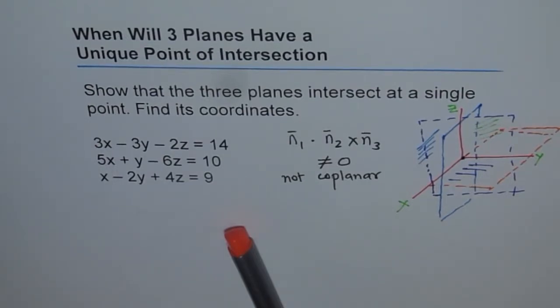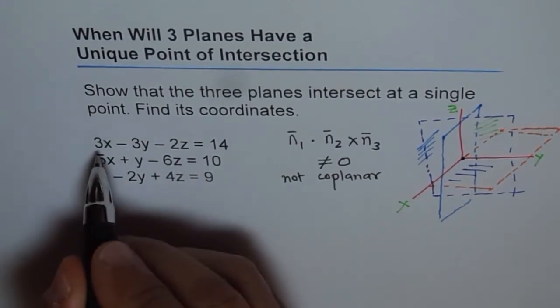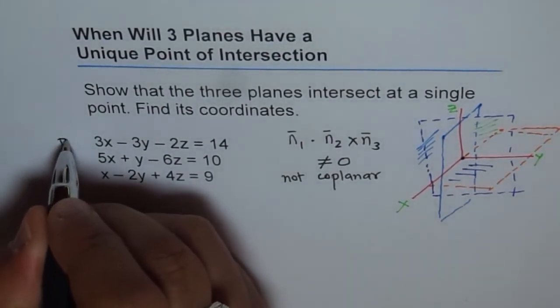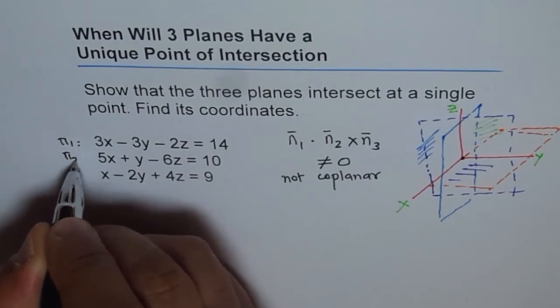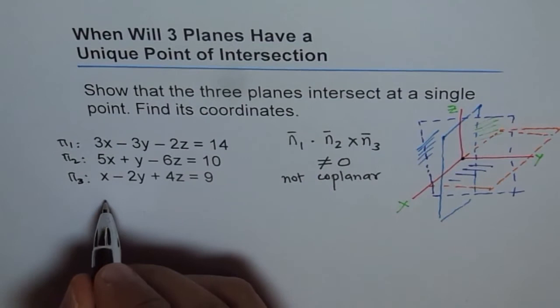So that gives you an idea that if at all the planes are intersecting at a point, in that case the scalar triple product should not be equal to zero. So if we figure out, what is the scalar triple product of this? So these are our three normals, let's say this is our plane 1, this is our plane 2, and that's our plane 3.